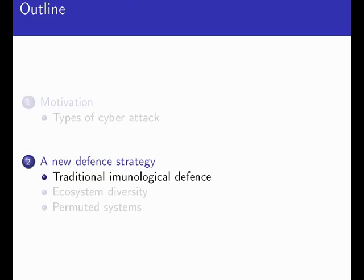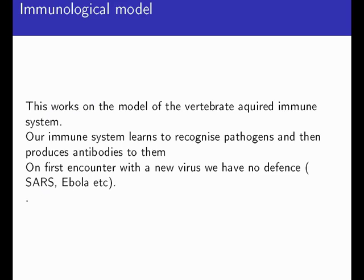We need a new defence strategy against this. The traditional defence has been what I call immunological defence — it works on the model of the vertebrate acquired immune system. Our immune system learns to recognise pathogens and then produces antibodies against them. The first time we encounter a new virus, we have no defence. If it is a particularly vicious virus like SARS or Ebola, it may kill us. If it is a less severe virus, it still produces illness but we are unable to deal with it until we produce the antibodies.